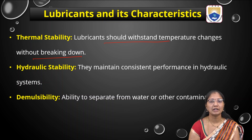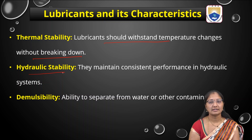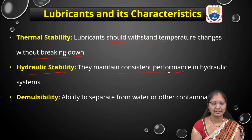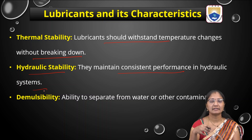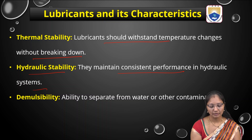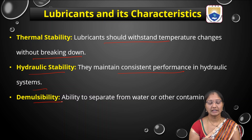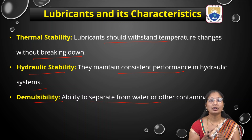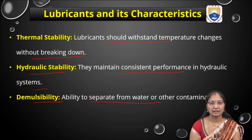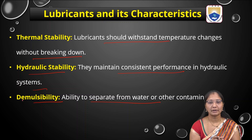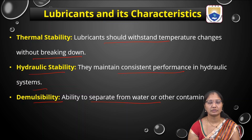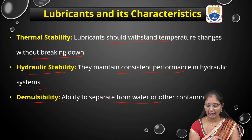Thermal stability should be a good characteristic property of a lubricant. Next is hydraulic stability — they maintain consistent performance in hydraulic systems under applied hydraulic pressure. Then, demulsibility is the ability to separate water from other contaminants. The lubricant should have this demulsibility property — the ability to separate water from other contaminants.